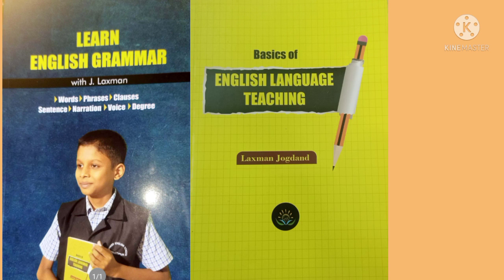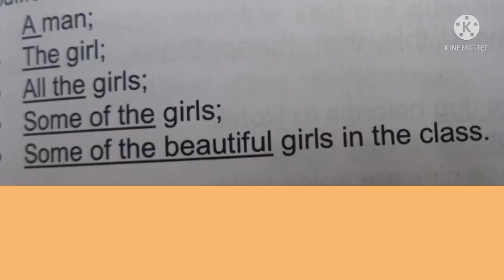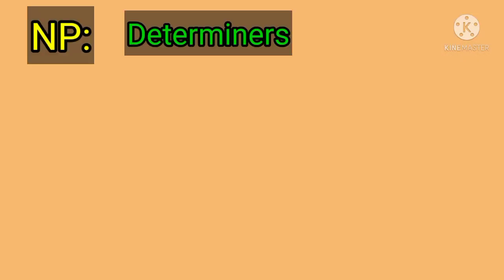See these examples: a man, the girl, all the girls, some of the girls, some of the beautiful girls in the class. The underlined part in these examples is the pre-modification. Let's try to understand determiners first. A determiner is a functional category — it is a pre-modifier that determines the reference range of a noun or noun group. A noun phrase expresses a range of meanings, some more definite and specific than others.